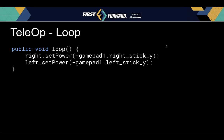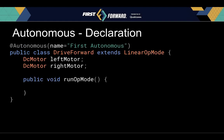It helps the programmer though. I would highly recommend using variable names and configuration names that describe what the variable is doing. Otherwise the second somebody else looks at your code, they're going to be like 'what is all of this?' Moving forward, we're going to look at the autonomous op mode.